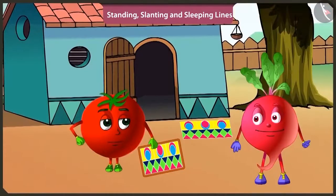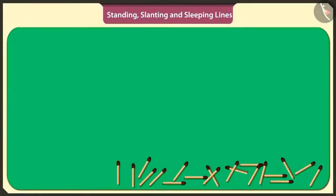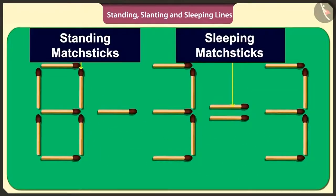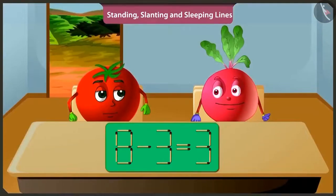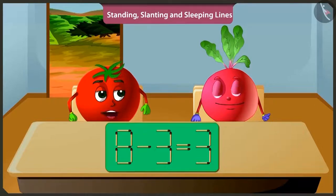Yes, let's go inside the house. Yes, let's go. Come on, let's play a fun game. Okay, Tingu. See, I will arrange these matchsticks in standing and sleeping lines to make a puzzle. Hey, but this puzzle is wrong. If we subtract three from eight, then we get five. This is the puzzle. You have to remove any one matchstick and place it again in such a way that it solves the puzzle.